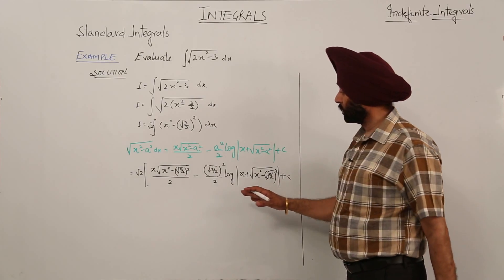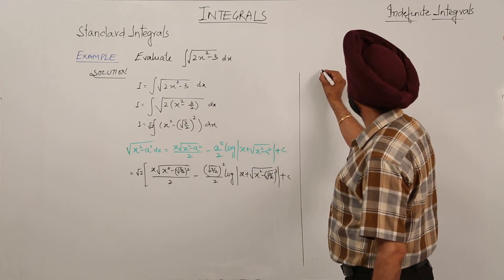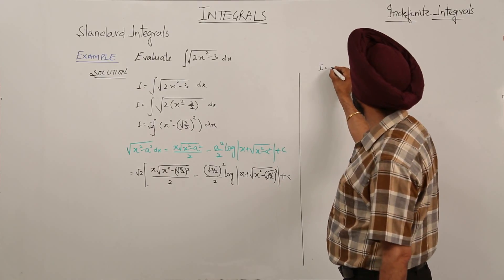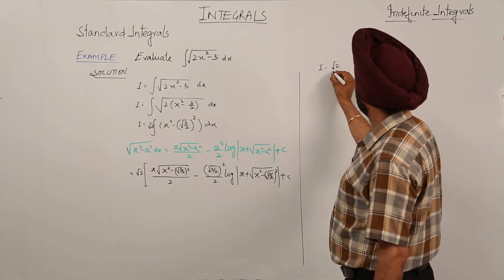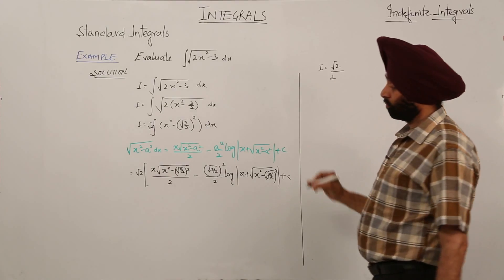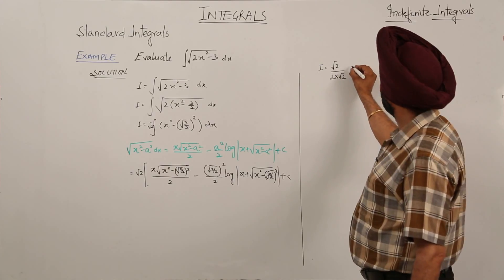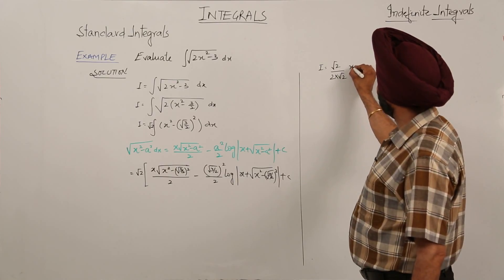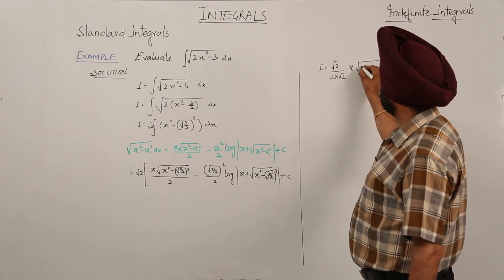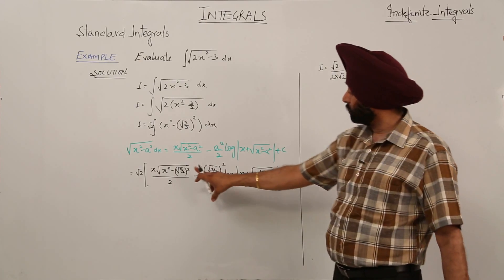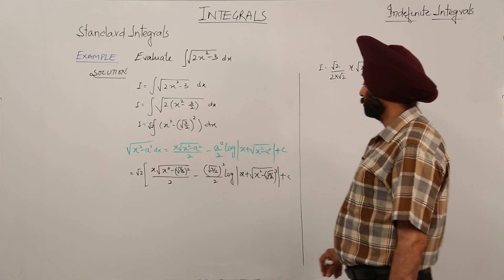Now what we are left with: root 2 upon 2 into root 2, and here it is x square root of x square minus, x square root of 2x square minus 3. I have taken this as a here, okay?